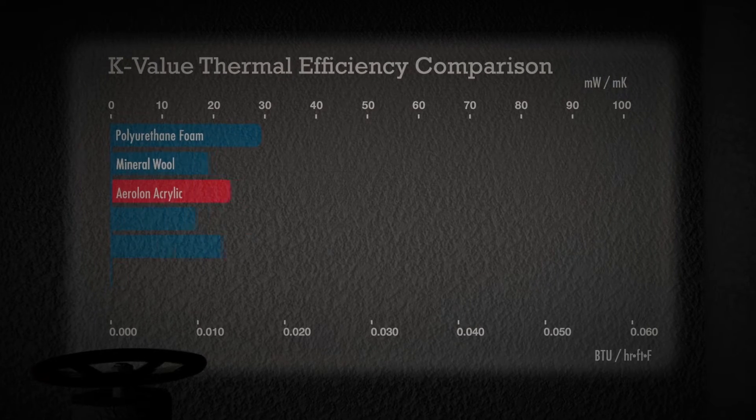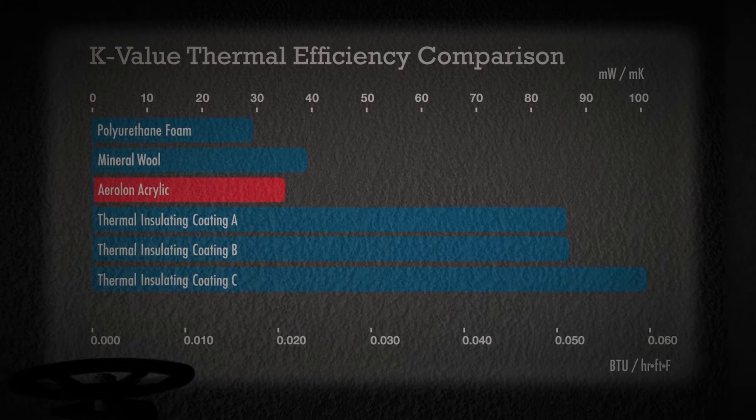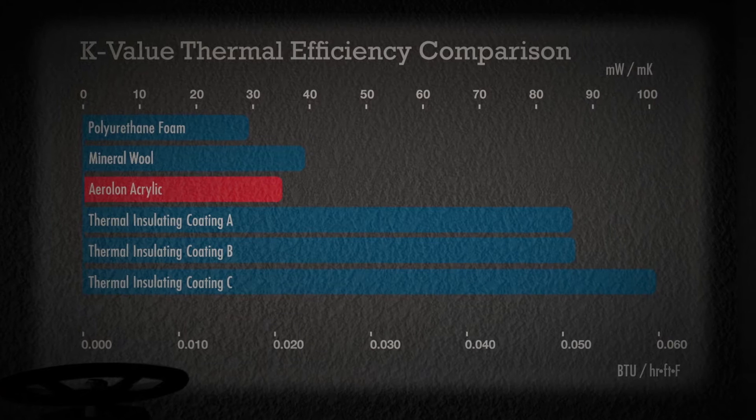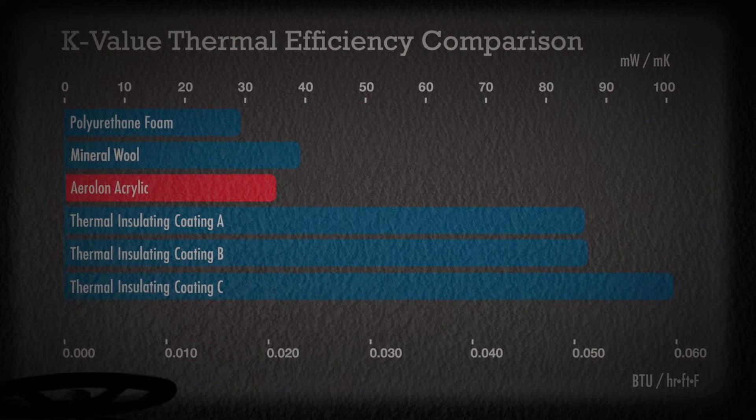Aerolan's Aerogel formulation is nearly twice as efficient as other thermal insulating coatings that use ceramic beads, and its performance is on par with many standard insulation options, including mineral wool and polyurethane foam.